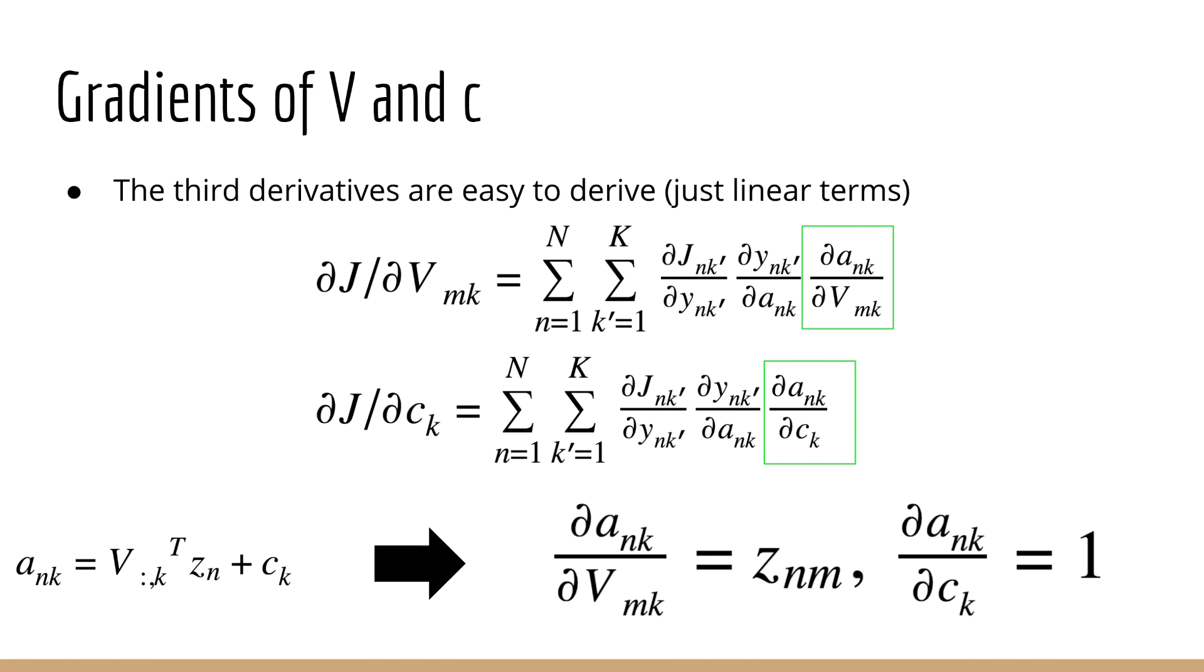Luckily for the third part, which is just a linear transformation, is easy to derive. The derivative of a_nk with respect to v_mk is z_nm, which mirrors what we had before with logistic regression. And the derivative of a_nk with respect to c_k is just 1.